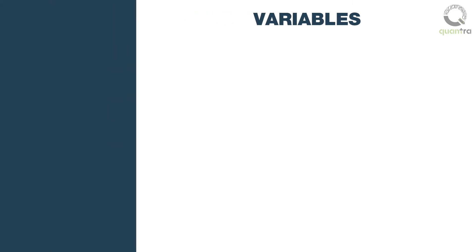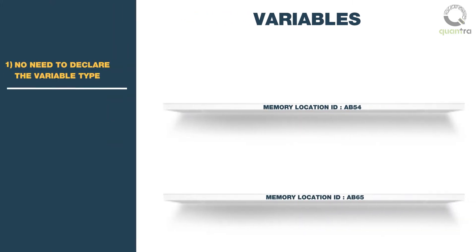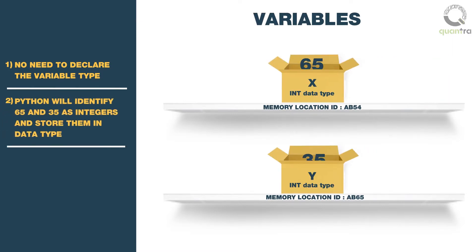Unlike other programming languages, there is no need to declare the variable type in Python. Python will identify 65 and 35 as integers and store them in the data type int. Have a look at the following explanation on your screen.